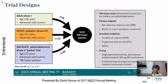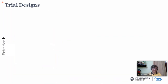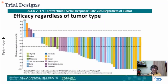The trial designs for entrectinib and larotrectinib included pediatric and adolescent patients who were fusion positive. Objective response rate was the primary endpoint, with TRK fusion determined by local laboratories. Larotrectinib dosing was 100 mg BID continuously. The results showed 76% response rates irrespective of the site of tumor — if NTRK fusion is present, you are assured of a response. 76% responses in a tissue-agnostic indication.